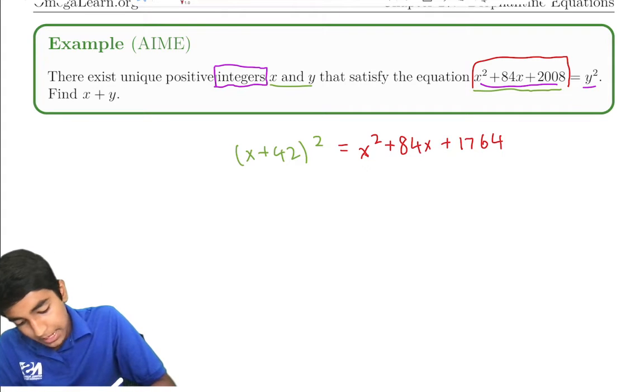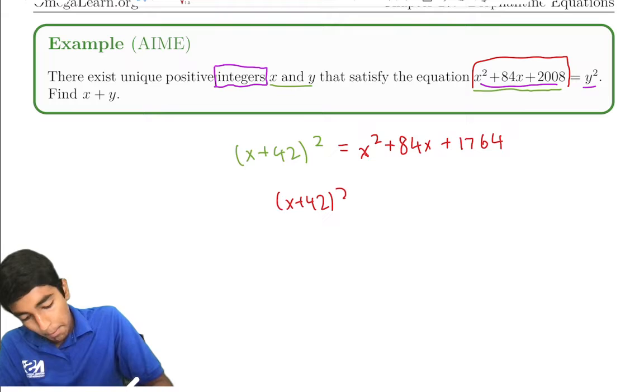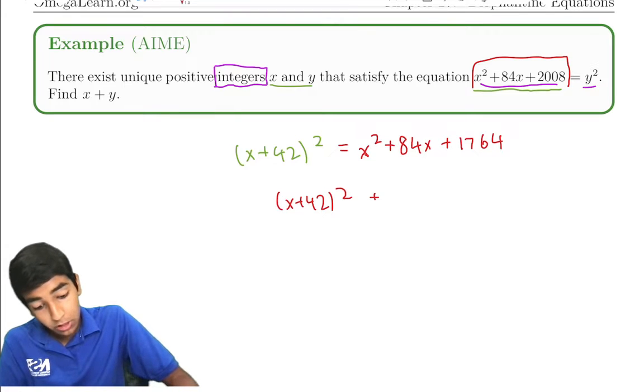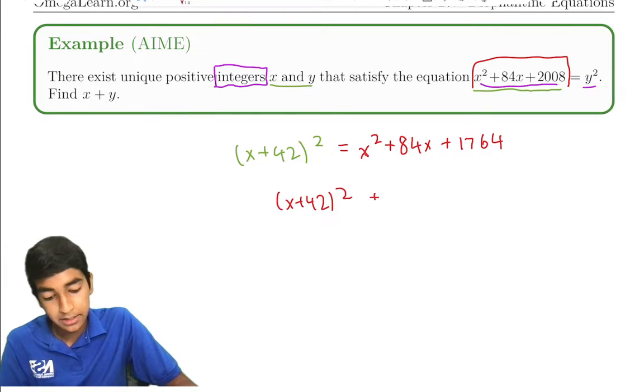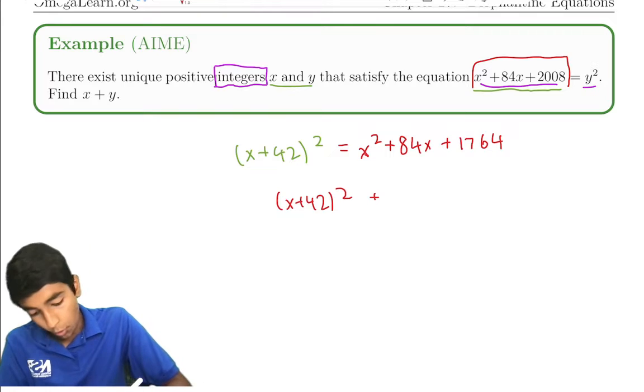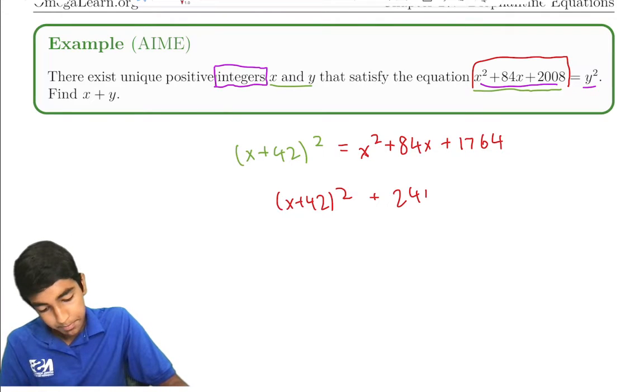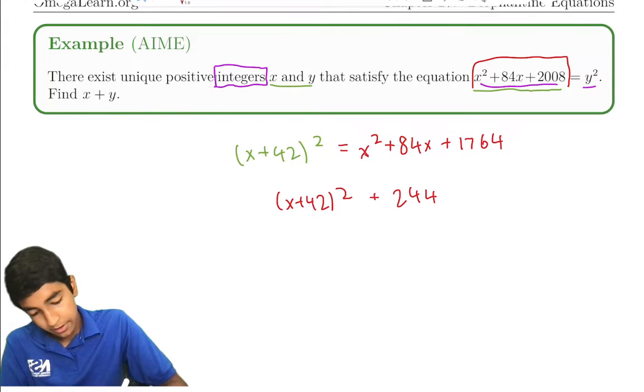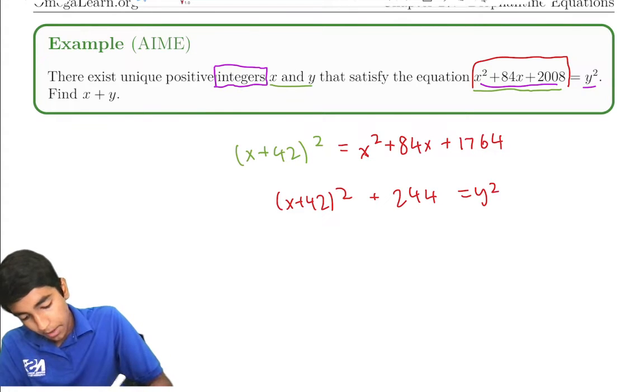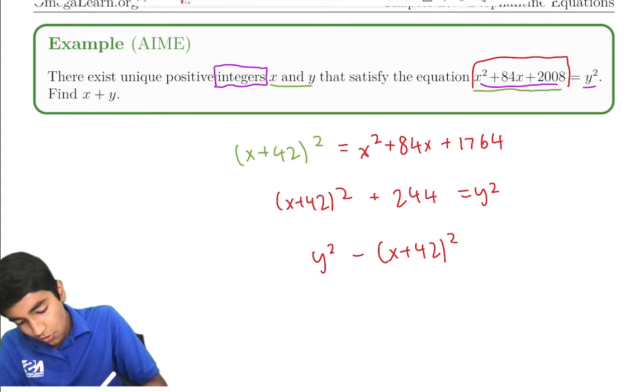But we're looking for x² + 84x + 2008. So it's going to be (x + 42)² plus, what's 2008 - 1764? That's 244. So this is y².